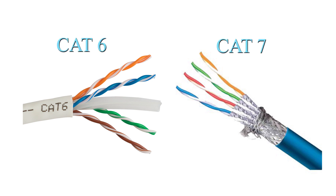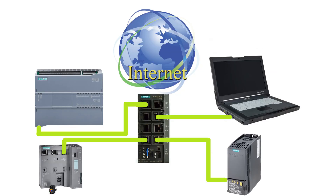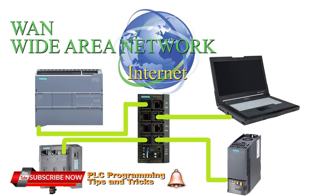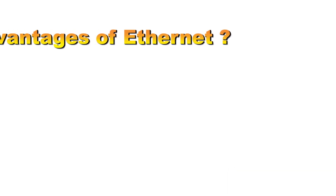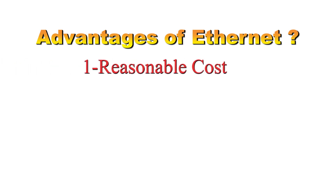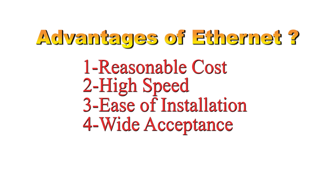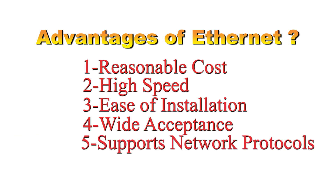Ethernet is advancing every day, moving from 1 gigabit per second to 100 gigabits per second. Connecting a local area network to the internet creates endless possibilities, forming a WAN or wide area network. Ethernet is very popular because it makes a perfect balance of data transmission speed, system cost, and installation cost. Its wide acceptance in industrial computing and its ability to support almost all protocols make it a perfect choice for projects.